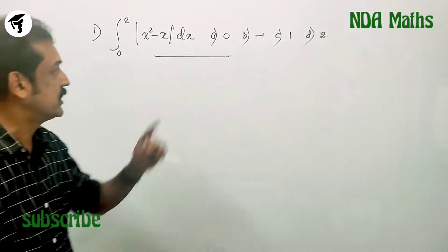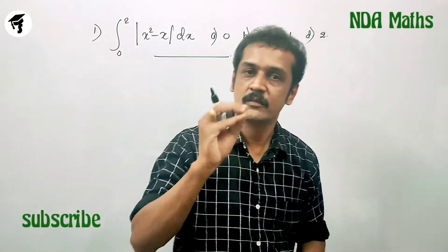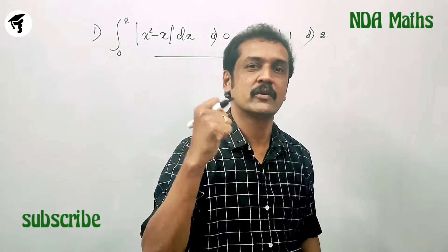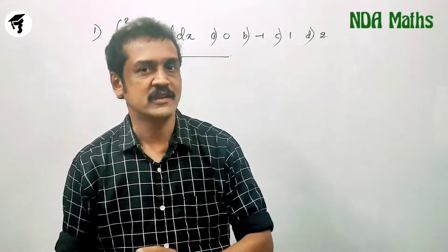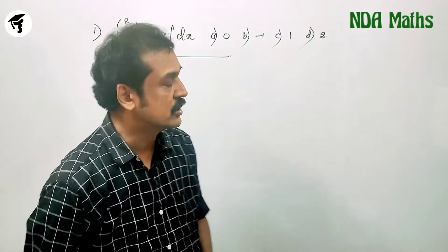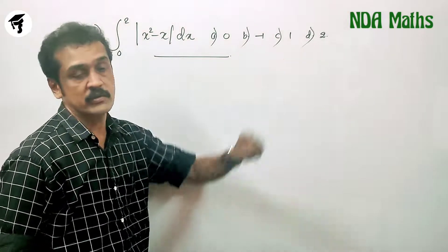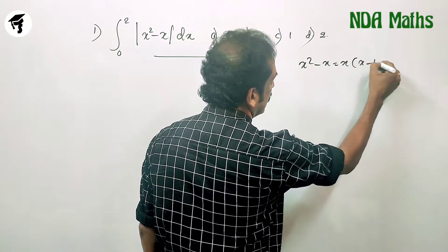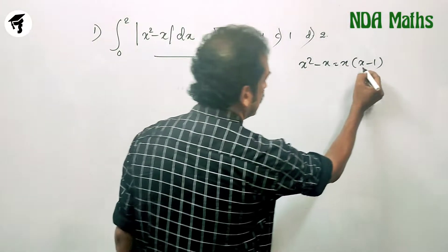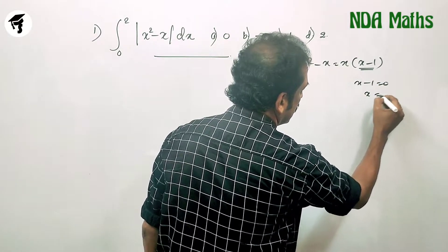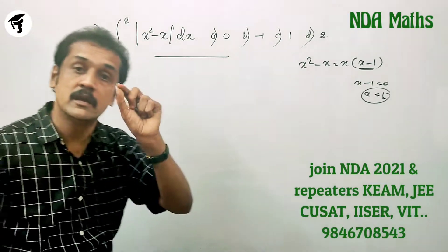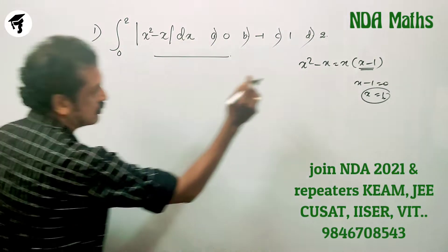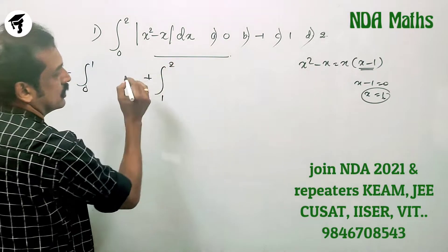Here is the integral from 0 to 2 of modulus of x² minus x dx. x² minus x equals x into (x minus 1). x minus 1 equals 0 gives x equal to 1. This number is equal to the interval, so we split this into 0 to 1 and 1 to 2.